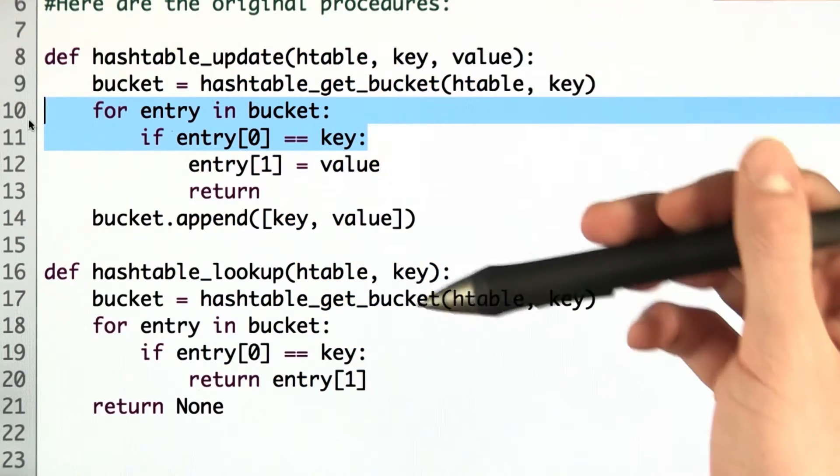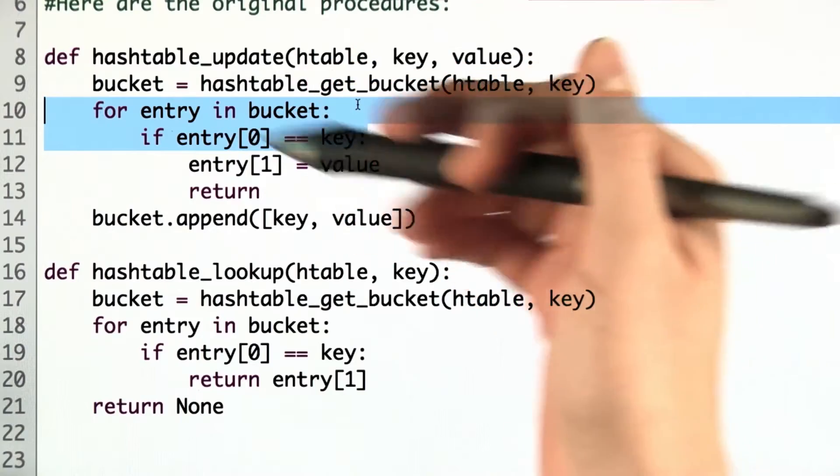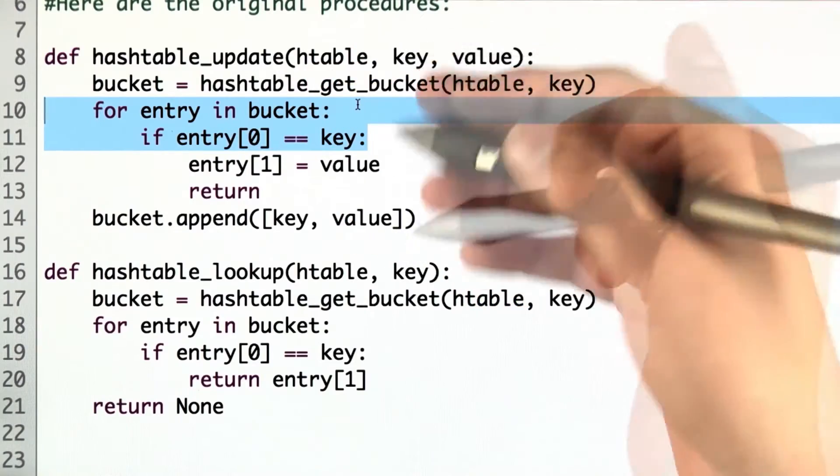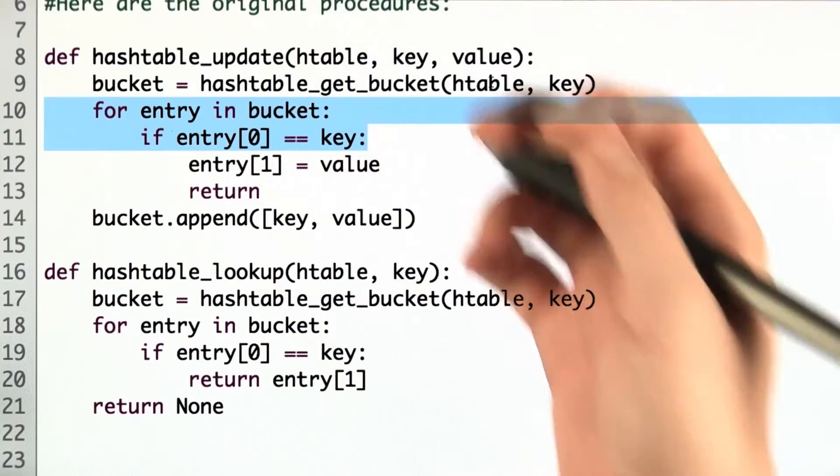In both functions, these two lines of code go through a given bucket, searching for an entry whose first value is the key. What we're going to do is take this code and move it into a separate helper function.